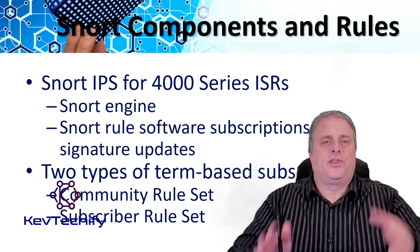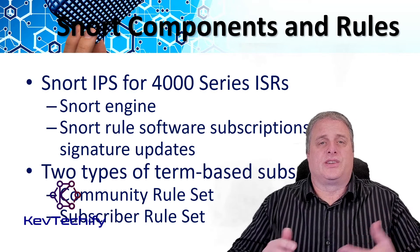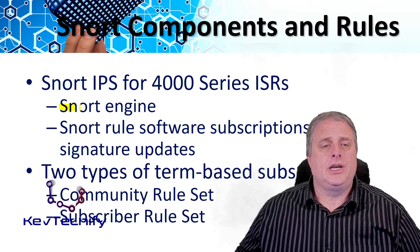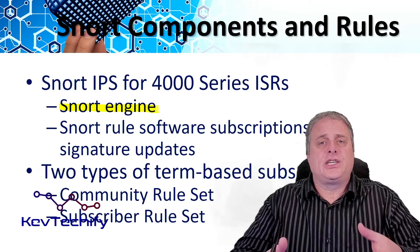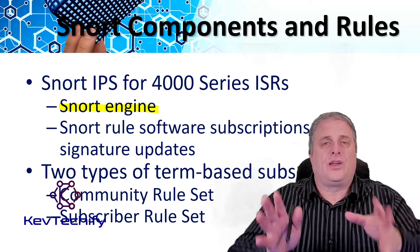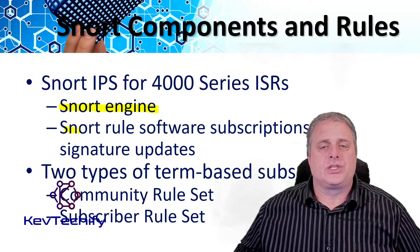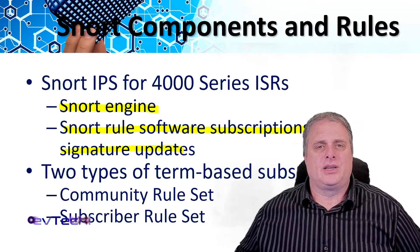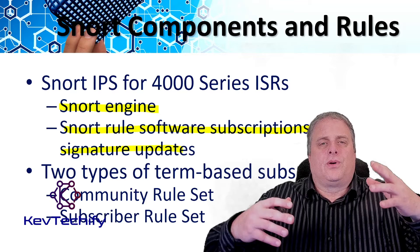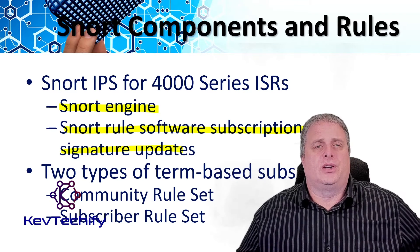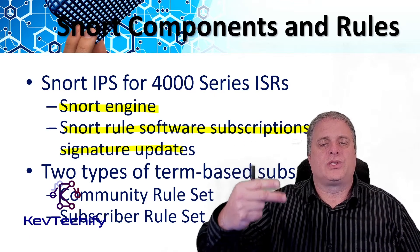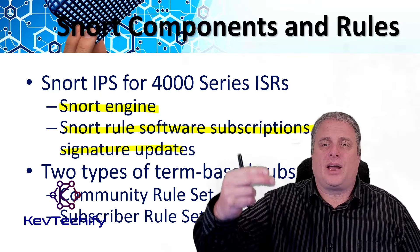The Snort IPS for 4000 series integrated services routers consists of two components: the Snort engine and the Snort rule software subscription. The Snort engine is the IPS detection and enforcement engine included in the SEC license for your 4000 series routers. The Snort rule software subscription provides signature updates — it's the Snort rule set to keep current with the latest threat protection, available as term-based subscriptions for one to three years.